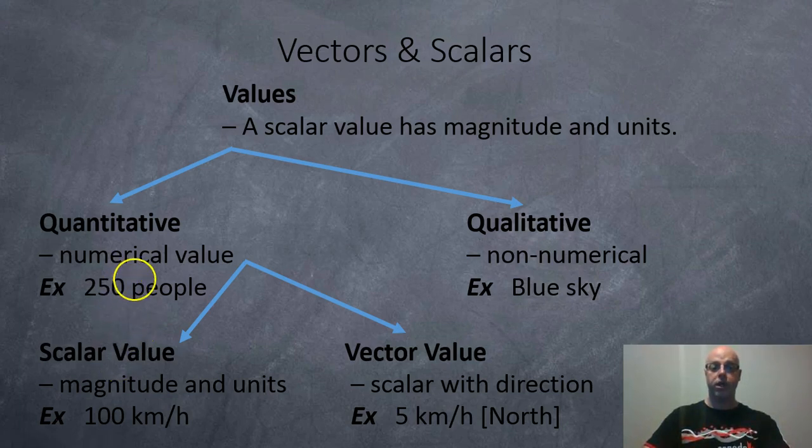And then in particular for quantitative we got our scalar values where you have magnitude and units like car traveling 100 kilometers per hour. And then you've got your vector value which is scalar with the direction. For example the velocity of a person is 5 kilometers per hour north.